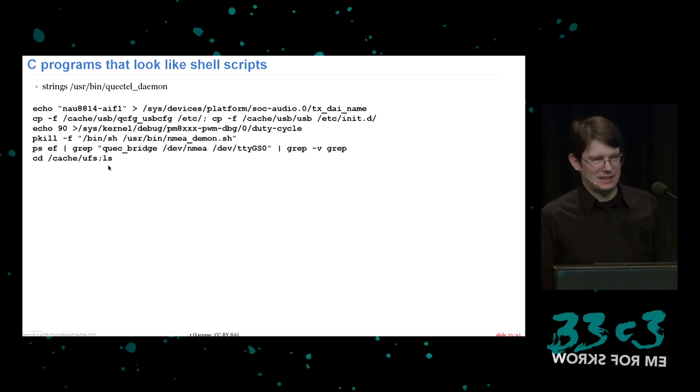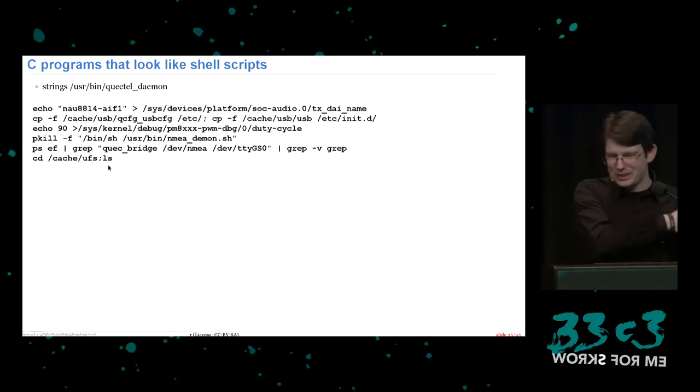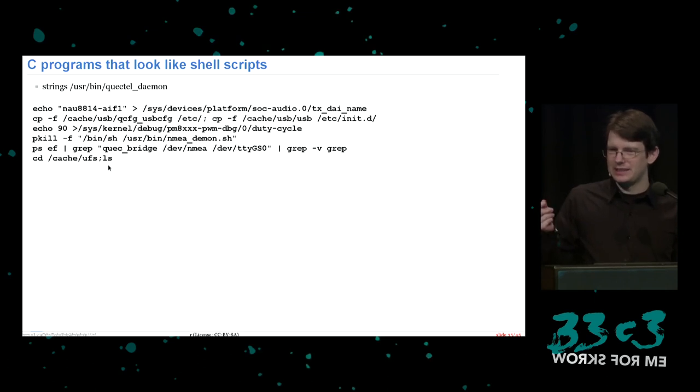I missed one example: all M2M modems have an LED whose blinking rhythm indicates network status. On this modem, a user space daemon calls system('echo 1 > /sys/class/gpio/...') to toggle the LED, rather than using the kernel's LED blinking infrastructure. So you have a daemon doing nothing but spawning shell processes via system() to toggle a GPIO. With that, I hand over to discuss firmware upgrades.